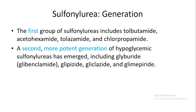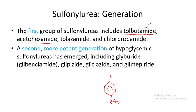The first group of sulfonyl ureas includes tolbutamide. The second generation or more potent generation of hypoglycemic agents includes glyburide, also known as glibenclamide, then glipizide, gliclazide, and glimepiride.